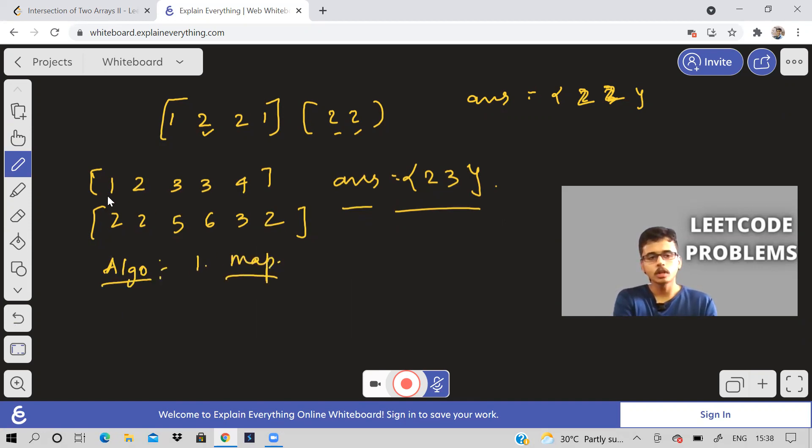What we'll do, we will store all the elements of first array in the map. We will find the frequency of each of the elements of the first array. And in the second array, what we will do, whenever we find out that an element in the second array occurs in the map, then we will store that element in our answer array, we'll make a vector called answer.